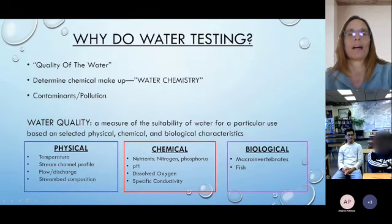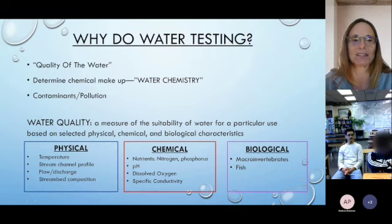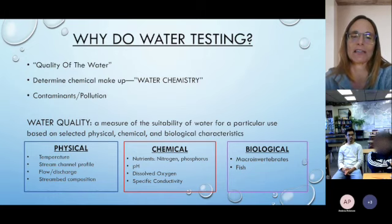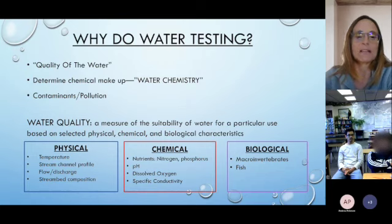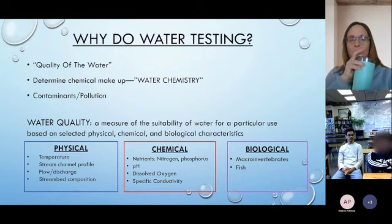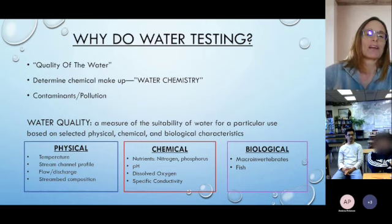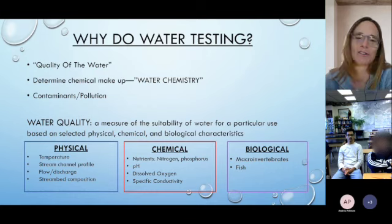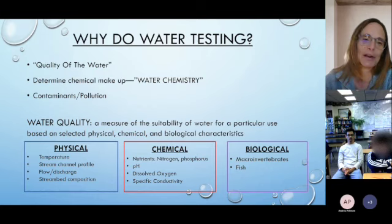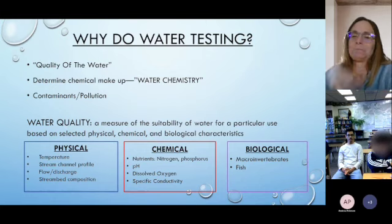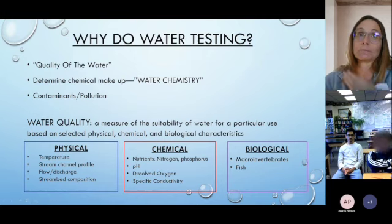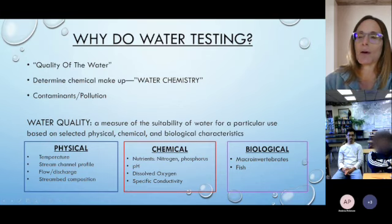So why do we do water testing? Water quality is basically the quality of water. You want to determine the chemical makeup — what things are dissolved in it, whether those are natural elements or contaminants and pollution. In general, water quality is a measure of how suitable the water is for what we want to use it for, whether those are physical, chemical, or biological characteristics. Water quality for drinking isn't the same as water quality for a fish habitat.